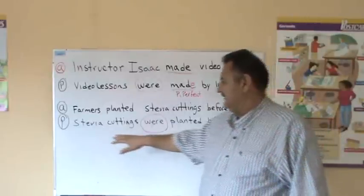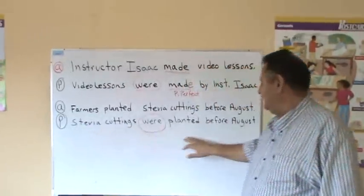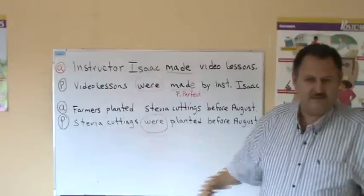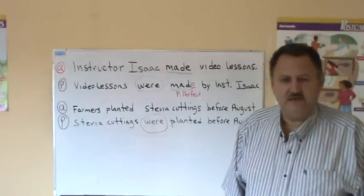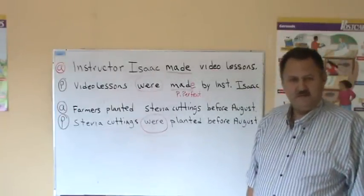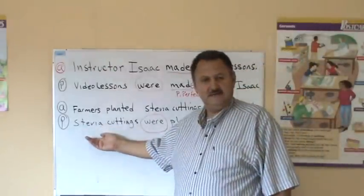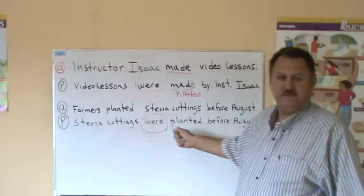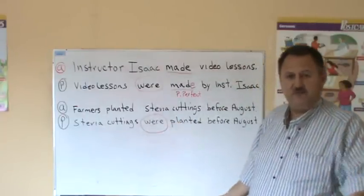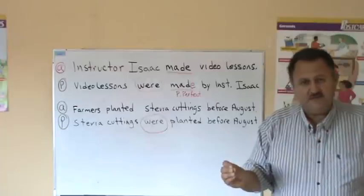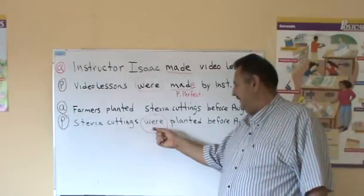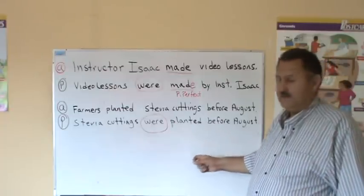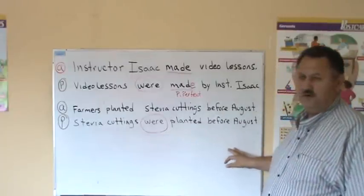In our next example, it's a passive sentence: stevia cuttings were planted before August. Notice that now, who planted the stevia cuttings is irrelevant — it's not important anymore. Stevia cuttings were planted. What happened? The stevia cuttings were planted — that's important. And the past passive here is expressed by the verb be. Planted, again, is not in the past; it's in the present perfect. So, stevia cuttings were planted before August.